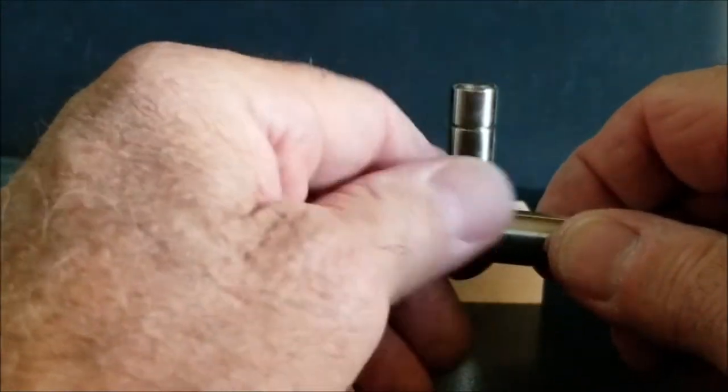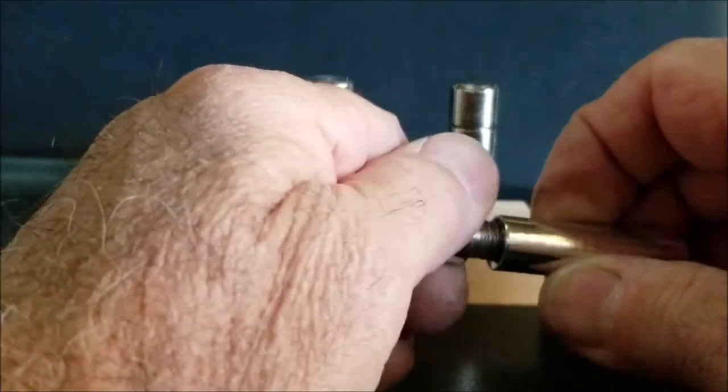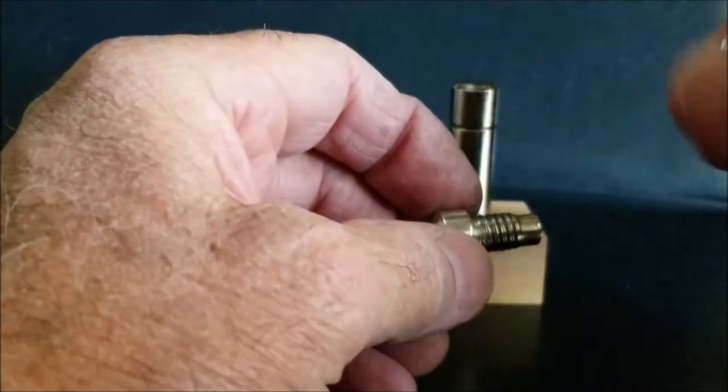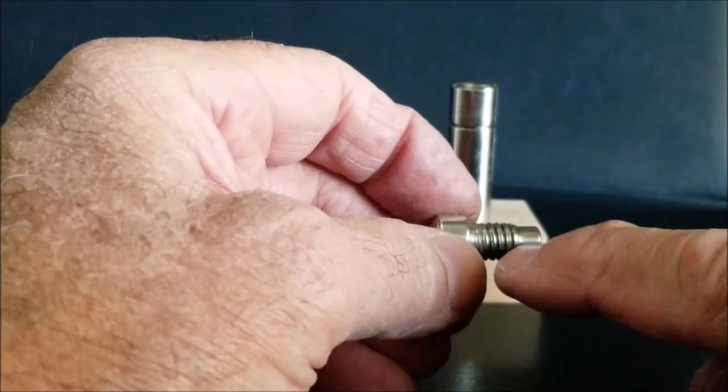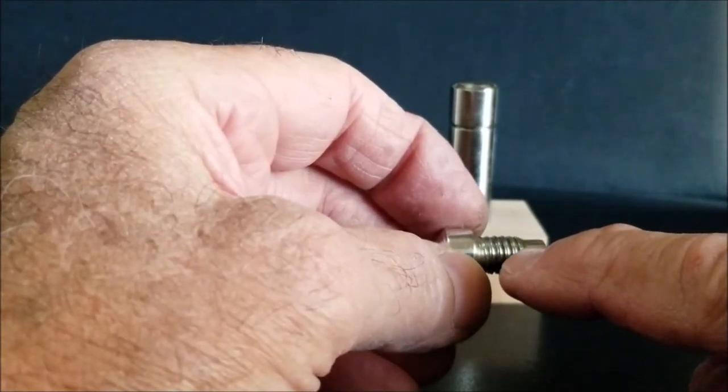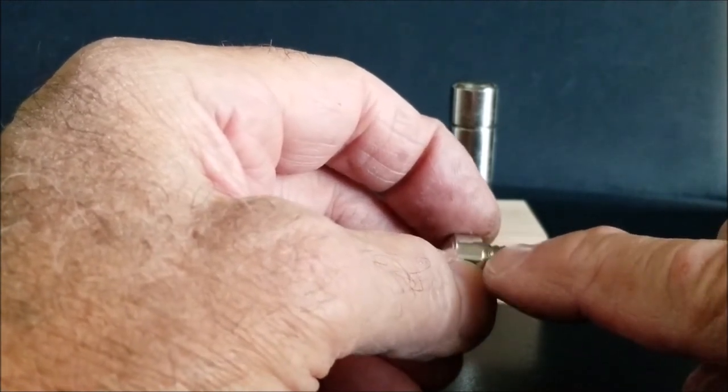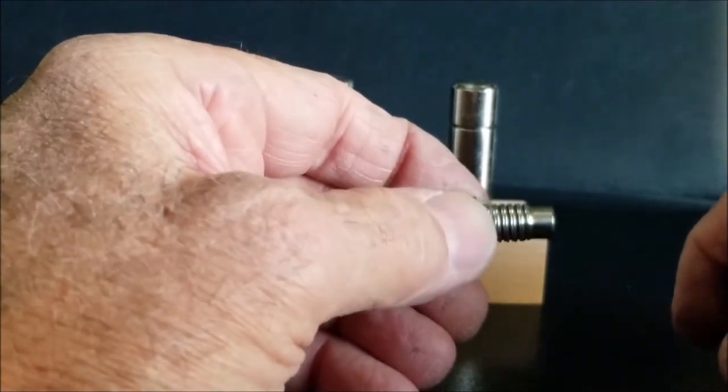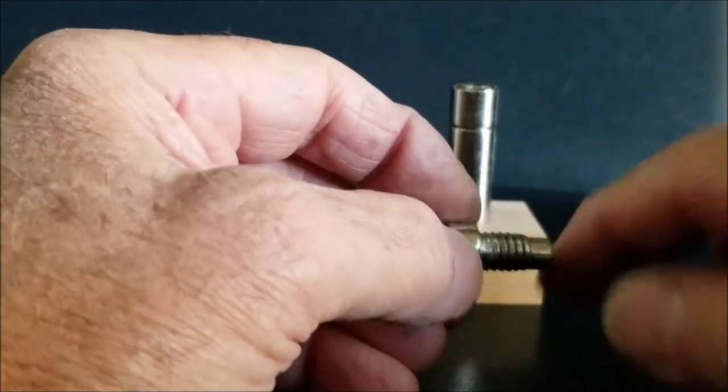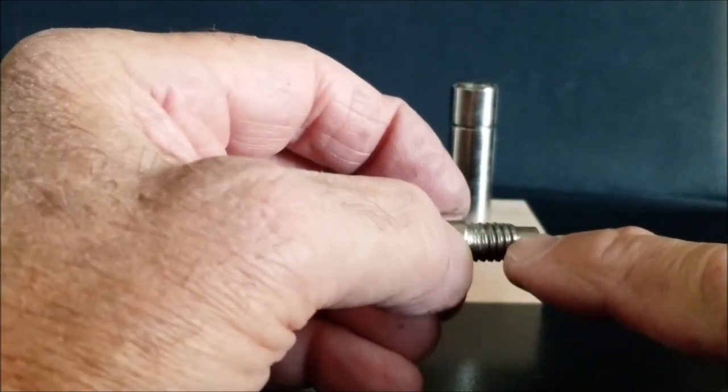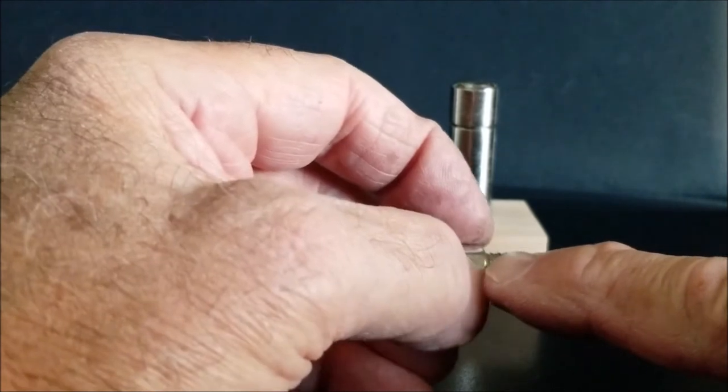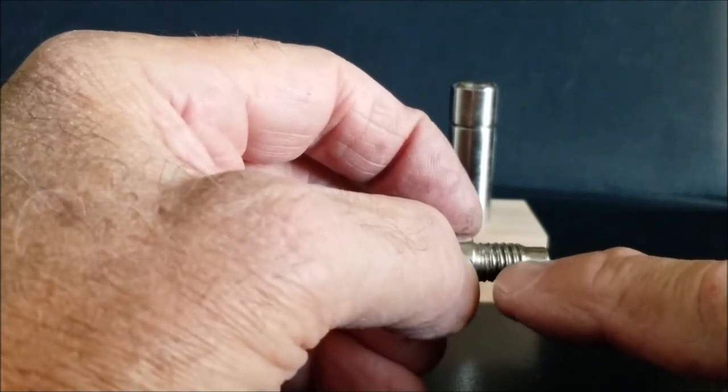Now, the way I created the threads is I began by using the thread cutting ability on the lathe to cut a 3/8 by 16 pitch thread. That's a national coarse using a 60 degree V blade to turn the screw. When I got done, unfortunately, the threading on this was very rough.